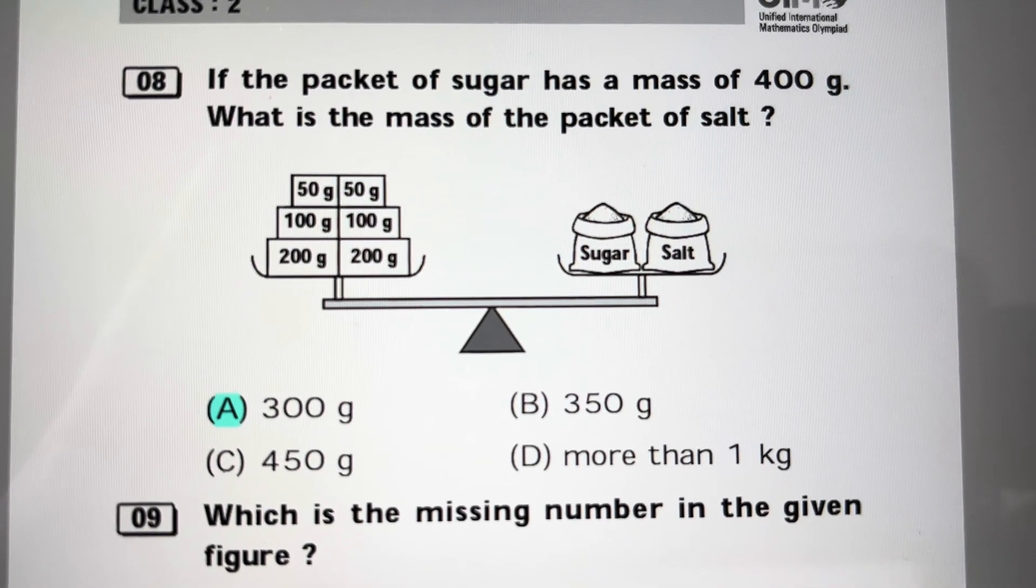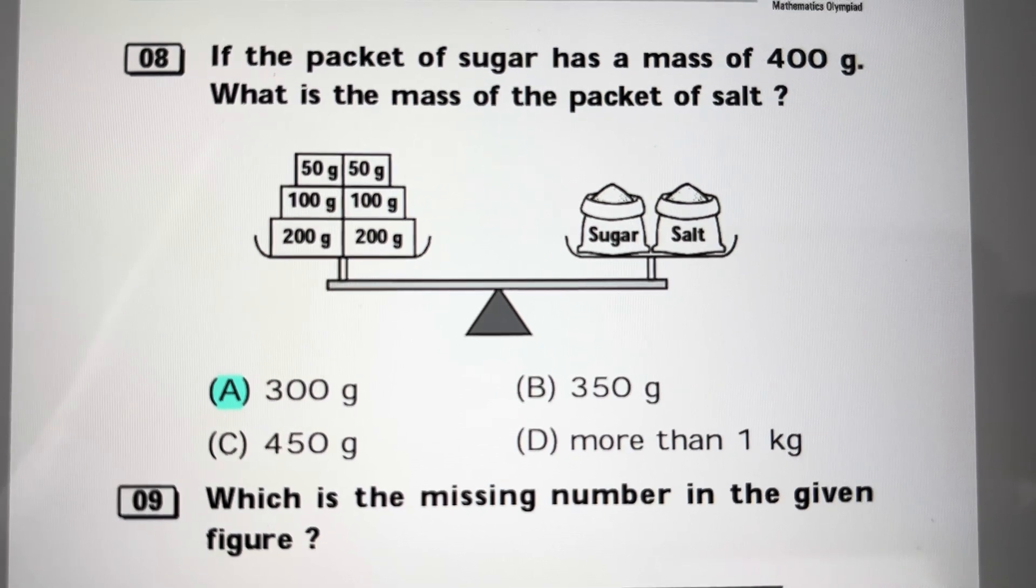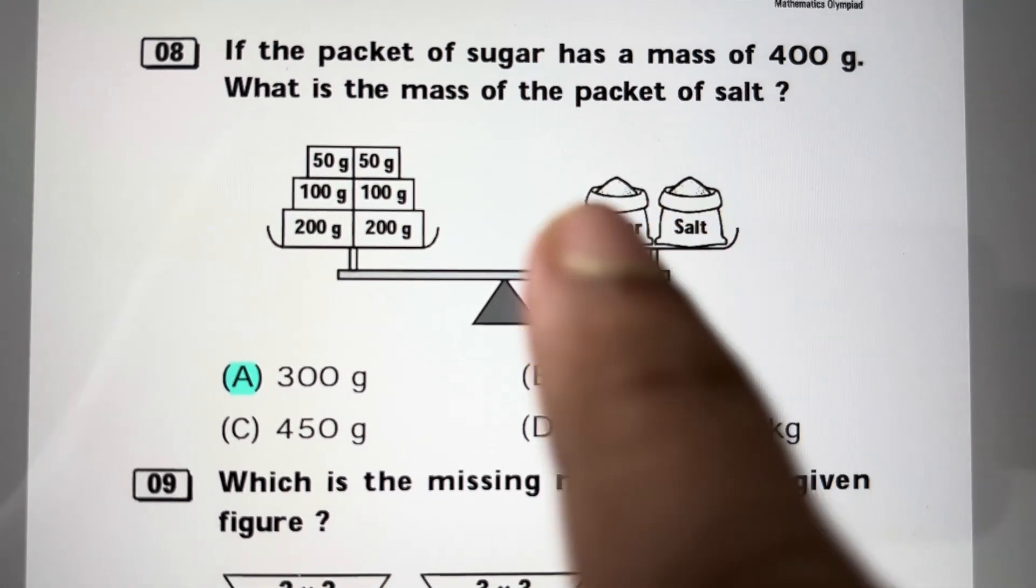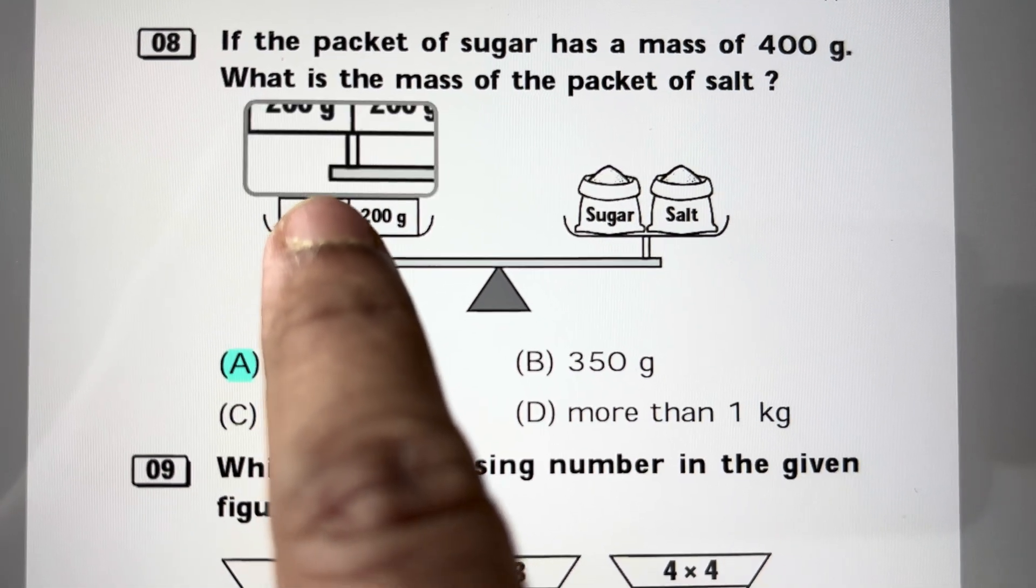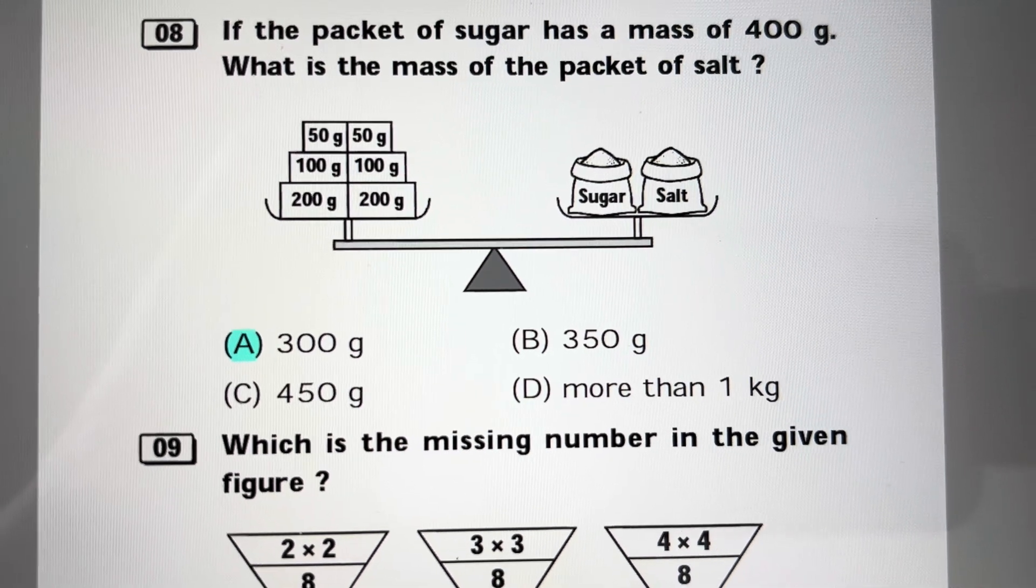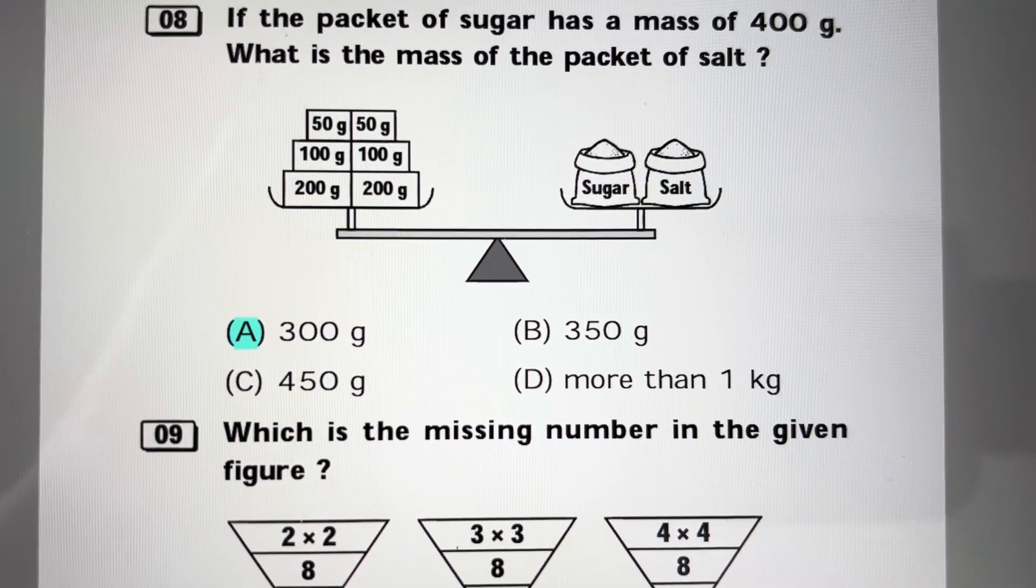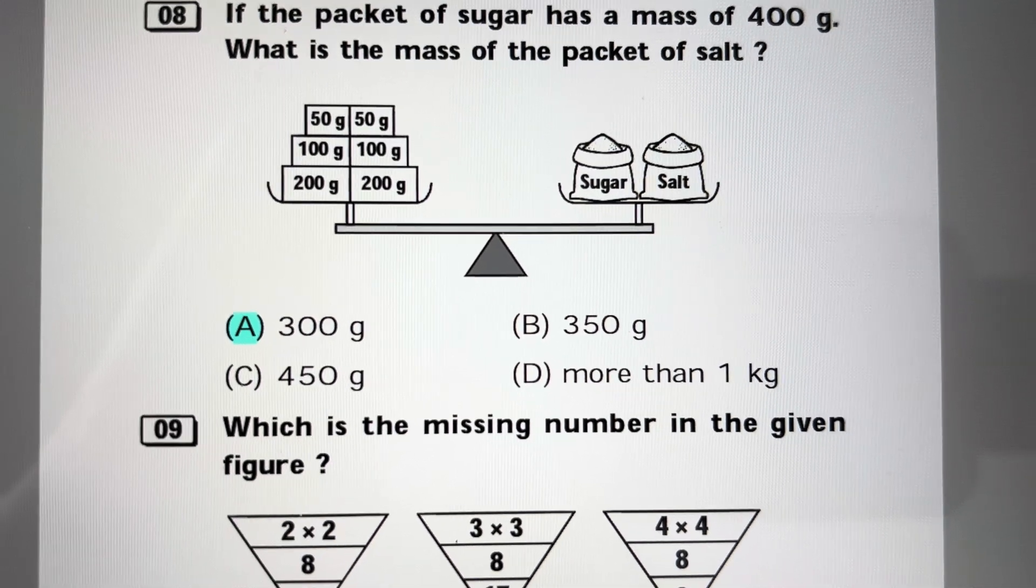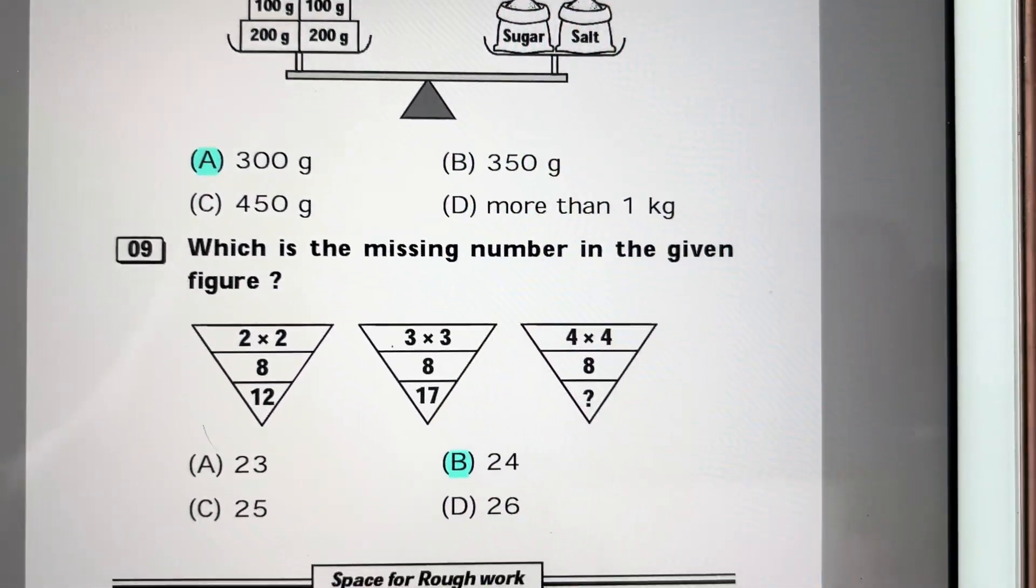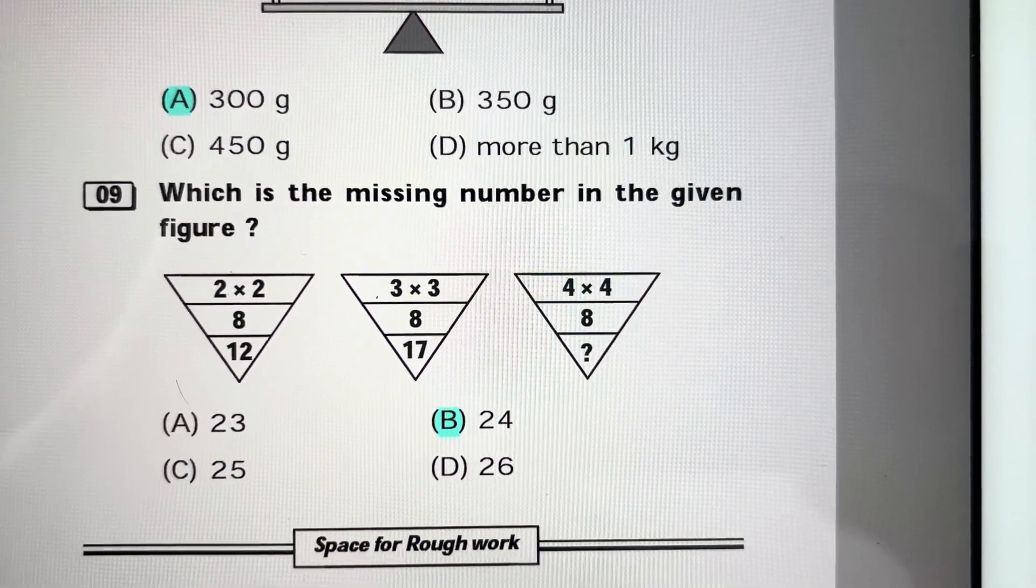Question 8: If the packet of sugar has a mass of 400 grams, what is the mass of the packet of salt? The sugar is 400 grams. You can delete this 200 plus 200. 200 plus 50 is 250, 250 plus 50 is 300. So answer is 300 grams, answer A.